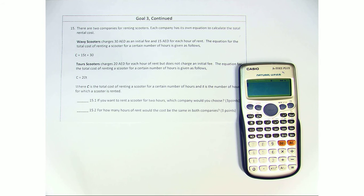There are two companies for renting scooters. Each company has its own equation to calculate the total rental cost. Wavy Scooters charges 30 dirhams initial fee and 15 dirhams for each hour of rent. The equation for the total cost of renting a scooter for a certain number of hours is given as follows: C equals 15T plus 30.